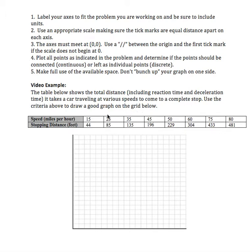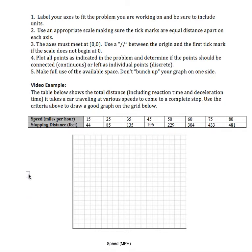The first thing we need to understand when drawing our graph is what our horizontal axis represents and our vertical axis. The horizontal axis is always represented by the first row in a table and the vertical axis by the second. So our horizontal is speed in miles per hour — let's put that on our graph. Our vertical axis is stopping distance in feet, so let's put that on our vertical.